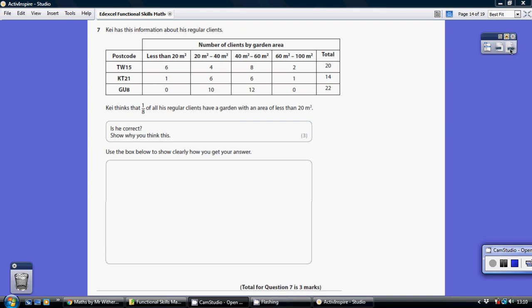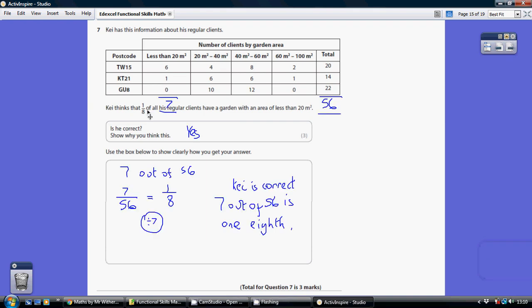Question 7. So Kai thinks that an eighth of his regular clients have a garden with an area of less than 20 metres squared. So let's have a look. How many clients have a garden of less than 20 metres squared?